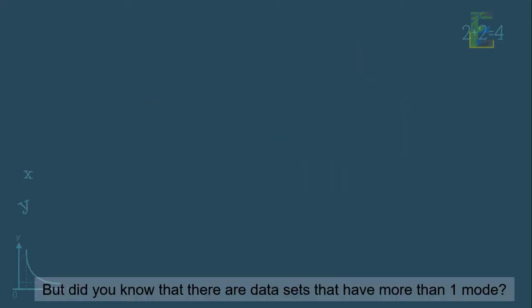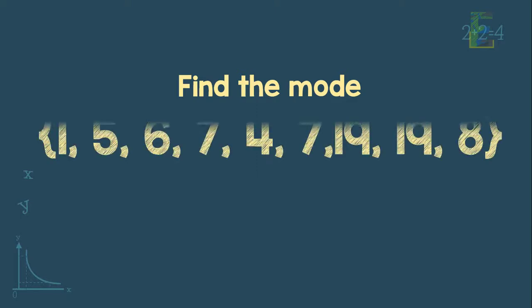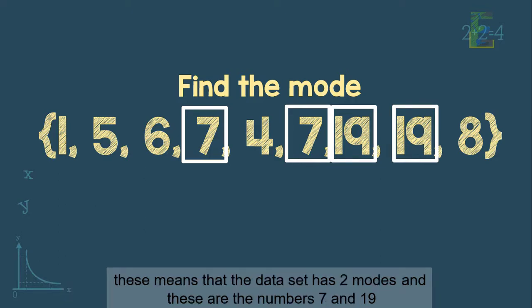But did you know that there are data sets that have more than one mode? Here is an example: 1, 5, 6, 7, 4, 7, 19, 19, 8. In this data set, the number 7 and number 19 is repeated twice. This means that the data set has two modes. And these are the numbers 7 and 19.